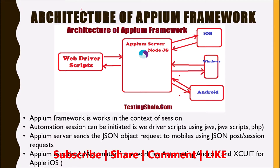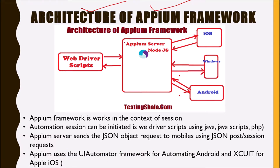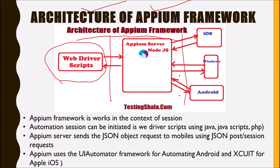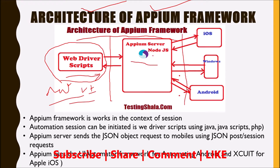The architecture of the APM framework looks like as below. We can split the architecture of the APM framework into three areas. One area is where we are sending the request to run the automation and execute the UI elements — we call it the client. There is another portion which is the APM server, which runs through Node.js. And we have a third area where we connect all the devices — it could be iOS devices, Windows devices, or Android devices.